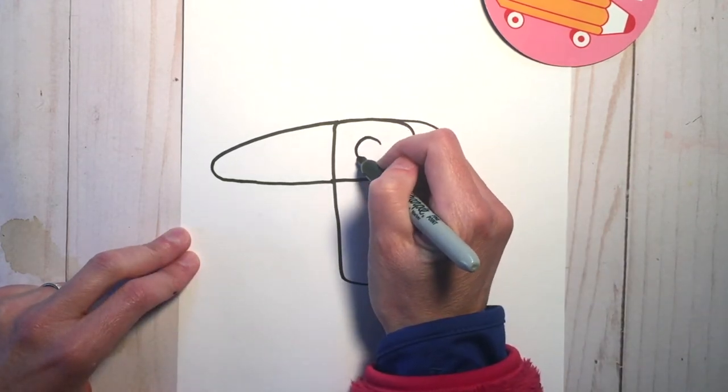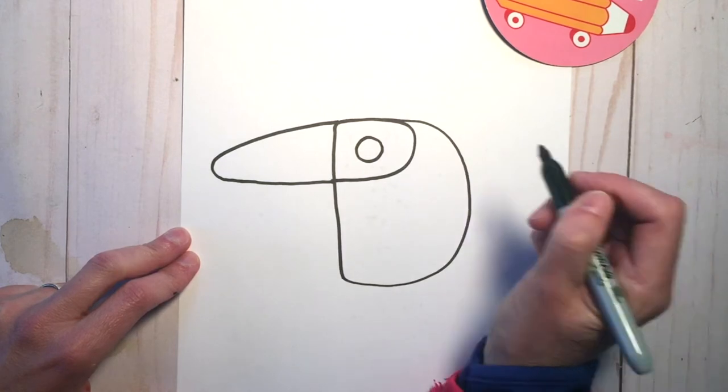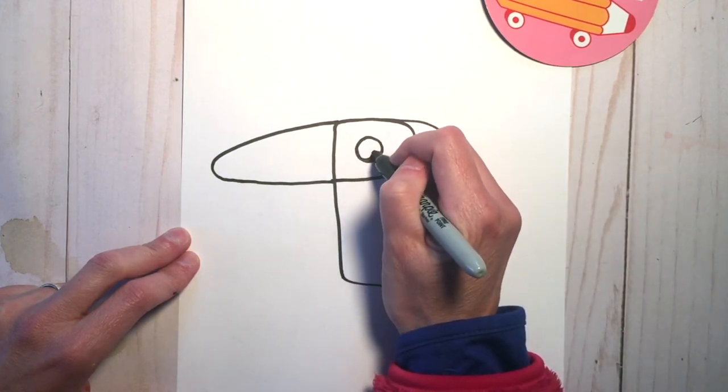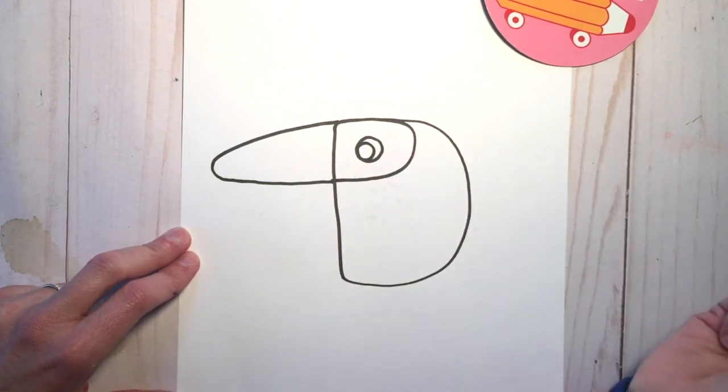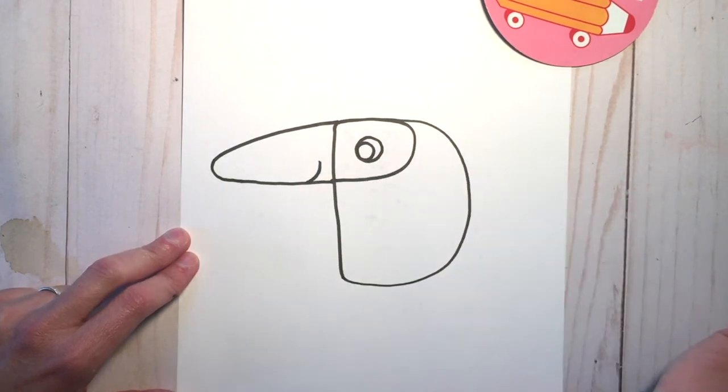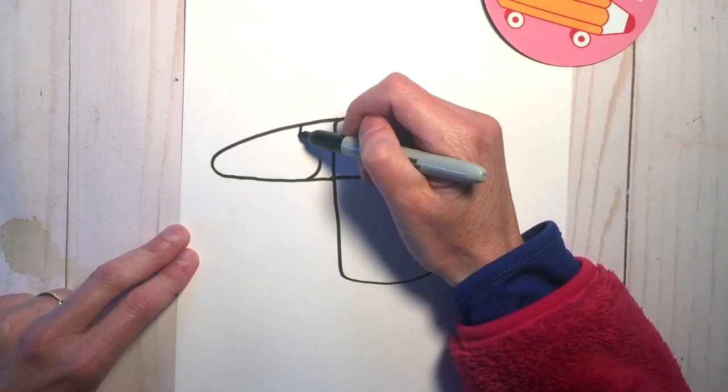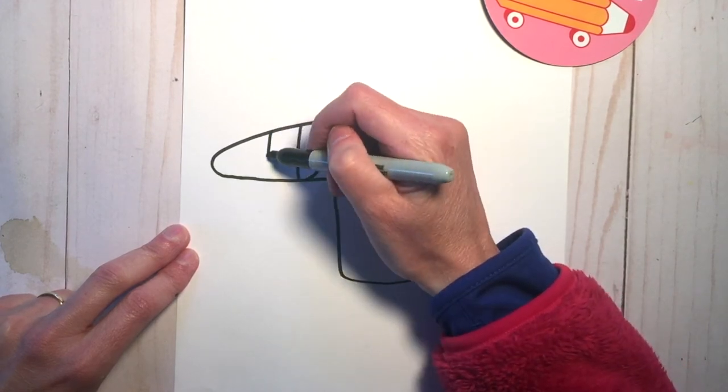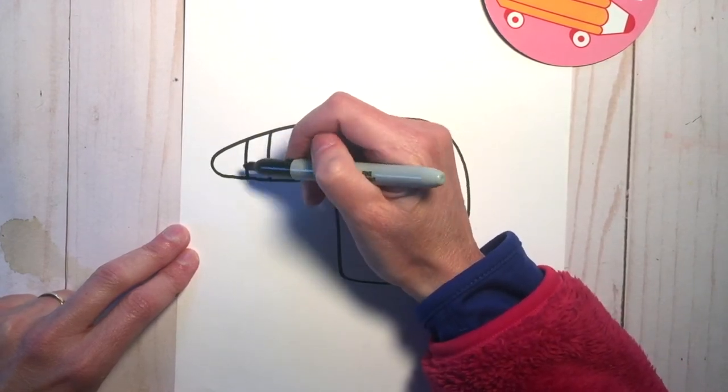Inside, make a circle, then another circle on the inside of that. Add a little smile. Then add slightly curved lines all down here for the stripes on the beak.